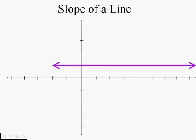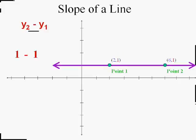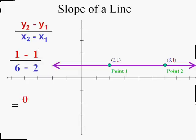It would even work for this line, but I bet you already know the answer if you understand slope. Let's pick two points — (6, 1) and (2, 1) — and put it into the formula. y2 minus y1 would be one minus one, and x2 minus x1 would be six minus two. One minus one is zero over four, and you already knew the answer looking at the picture was zero because it's a flat line.